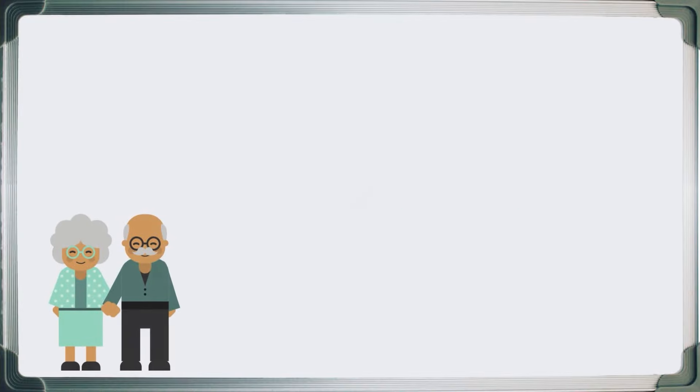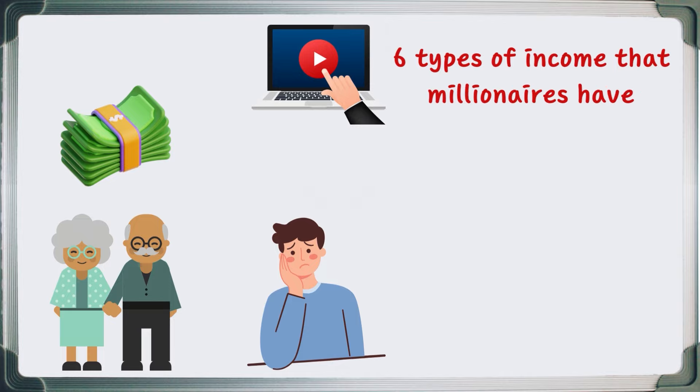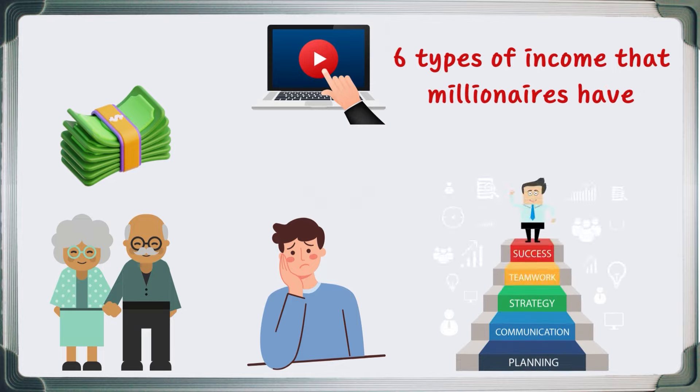While your grandparents might have managed to survive with a single income source in years past, nowadays it's nearly impossible. In today's video, we'll share with you six types of income that millionaires have and give tips on how you can achieve them too. If you're new to the channel, don't forget to subscribe. Let's get started.